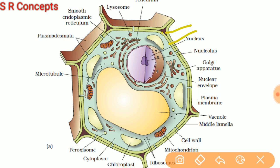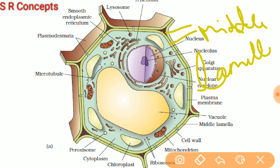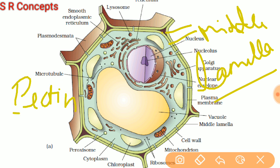This cementing material between the two cell walls is called middle lamella — spelled L-A-M-E-L-L-A. The middle lamella is made up of pectin, meaning it is rich in a chemical known as pectin. The middle lamella works in the same way as bricks of a wall are joined together by a cementing material.